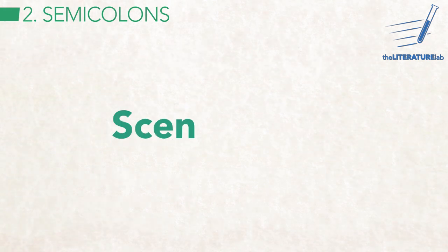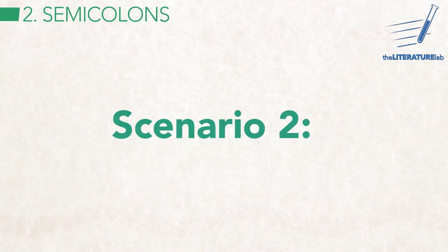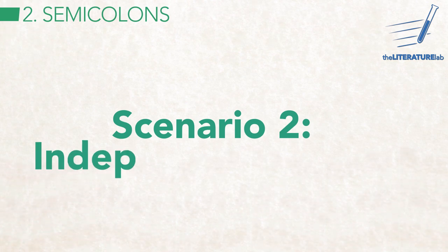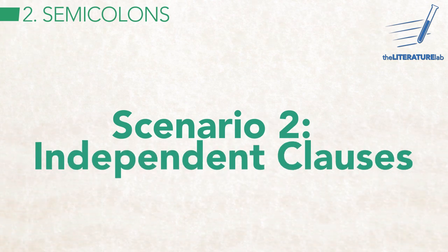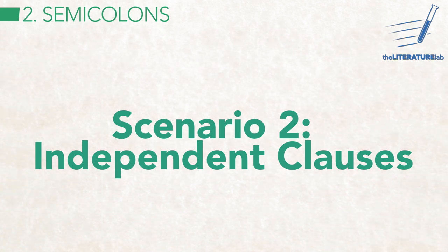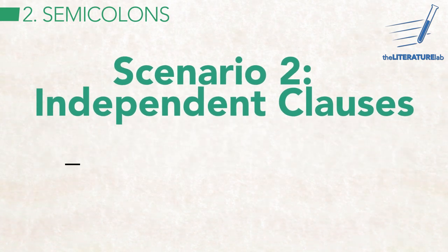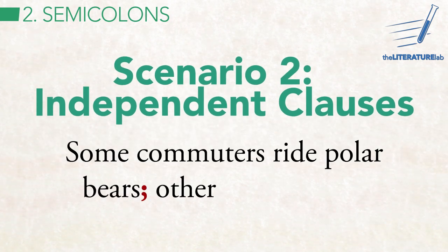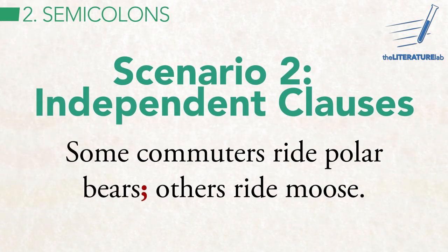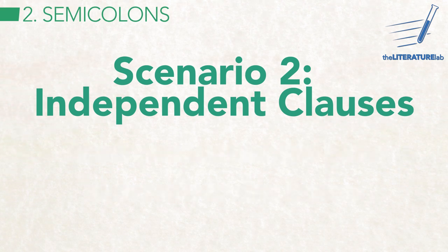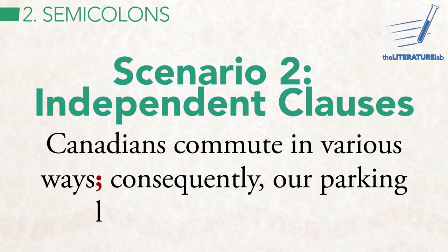The other scenario is one where you could use a period, but a semicolon is more appropriate. Remember independent clauses — complete sentences with a noun and a verb? If you have two that are closely linked, say in a comparison, use a semicolon. It's even more common when the second sentence starts with a transition word or phrase.